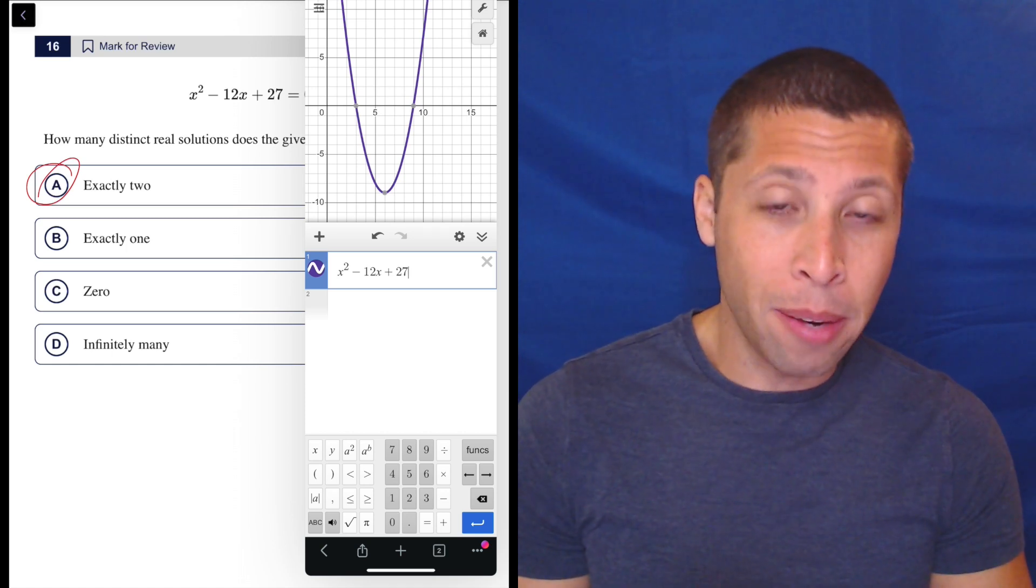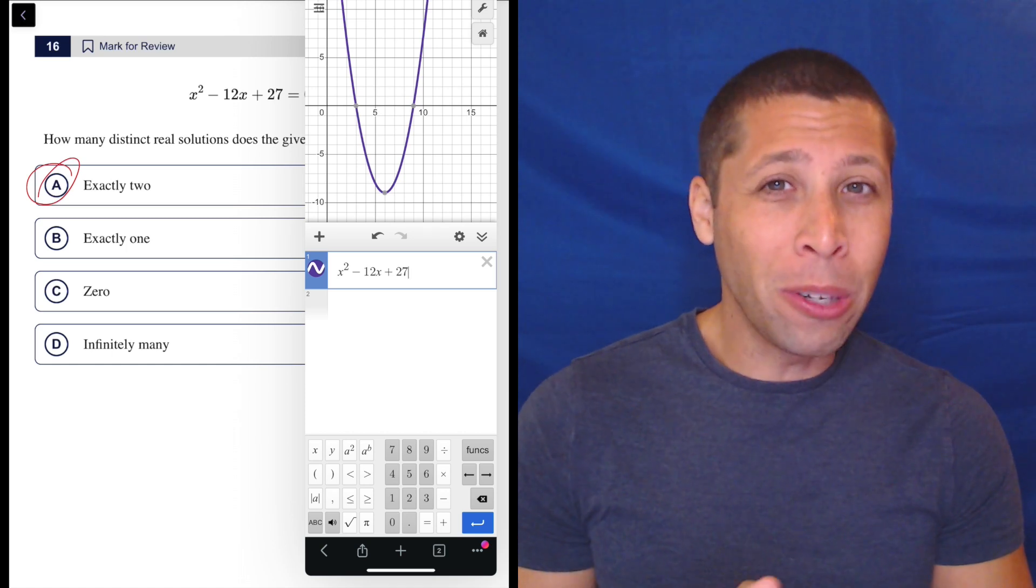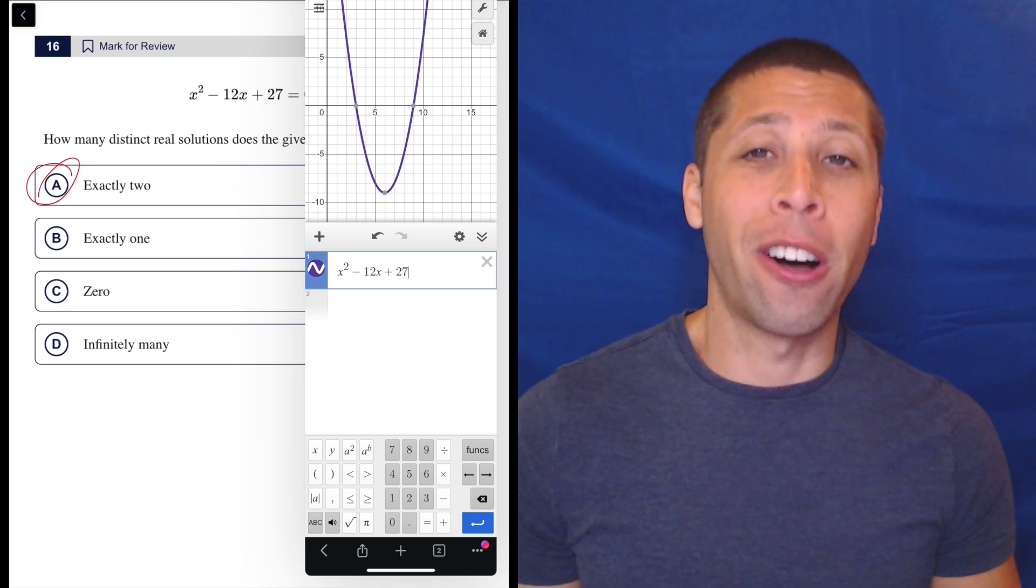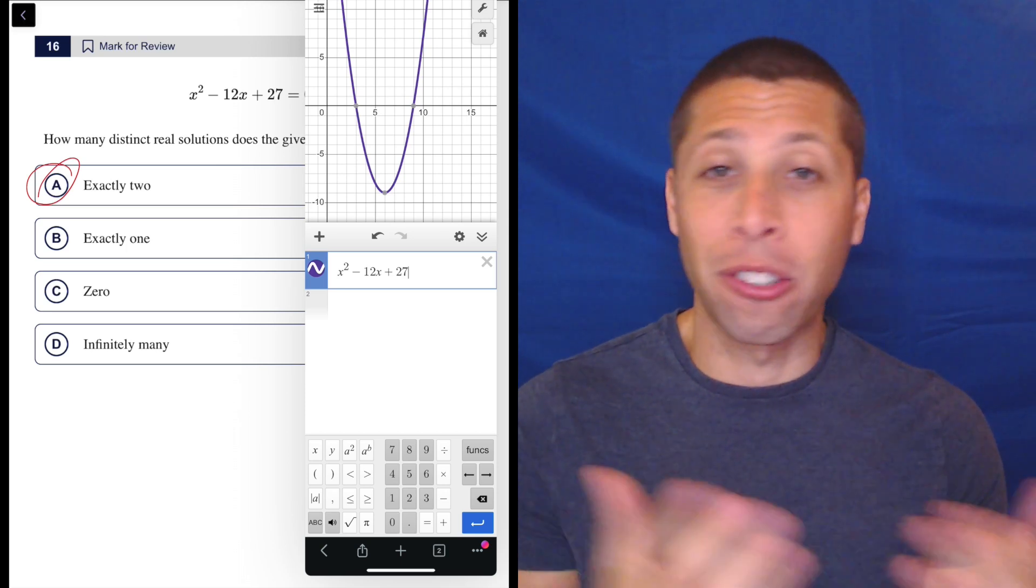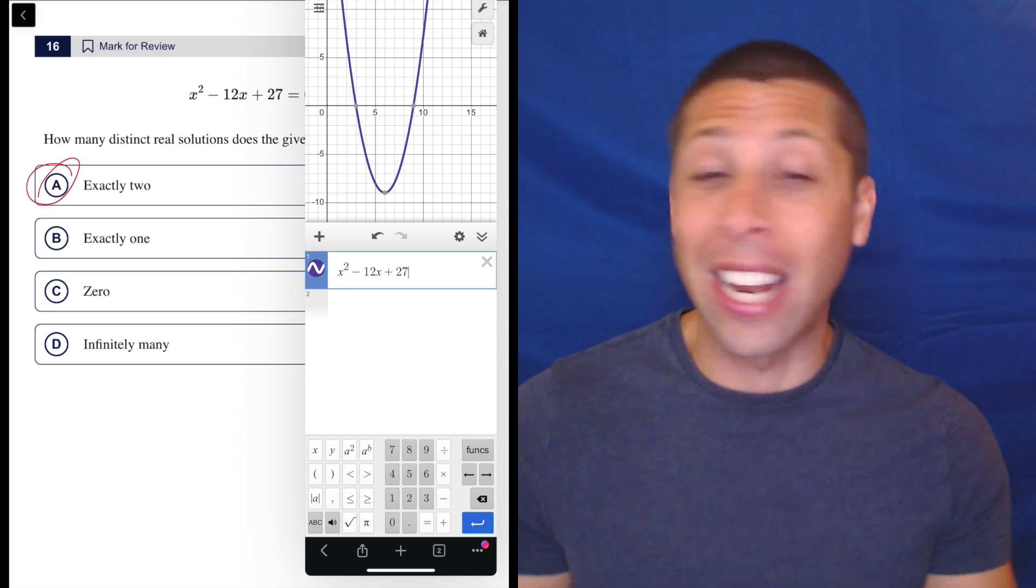But if we graphed it with the equals zero, then we wouldn't see anything. We'd have a blank graph because what it's trying to do is graph the solutions, but there are no solutions. So you get nothing. It's a blank graph.